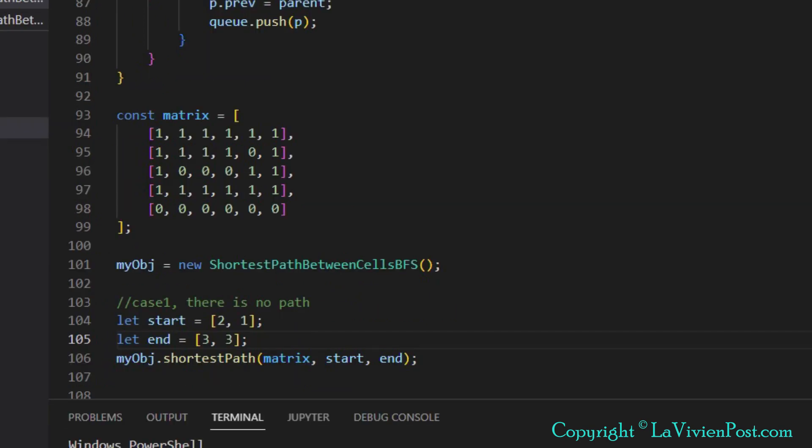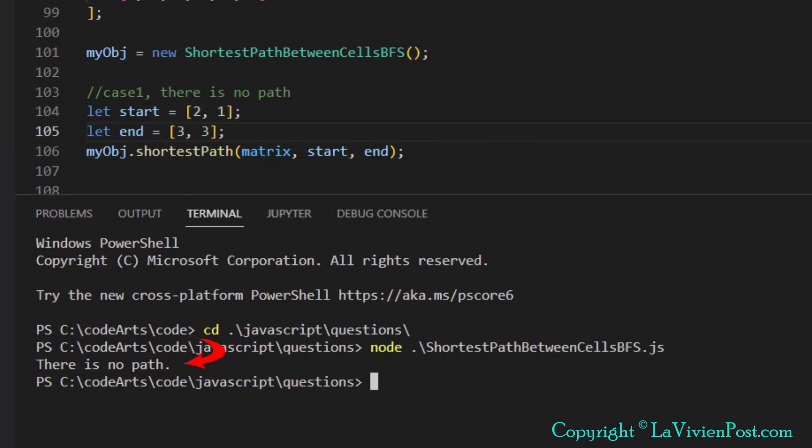In the third case, we define start cell 2,1 in which the value is 0. End cell 3,3. We run the code. The return from BFS is empty list.